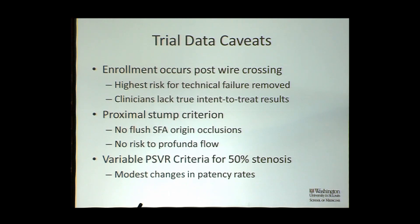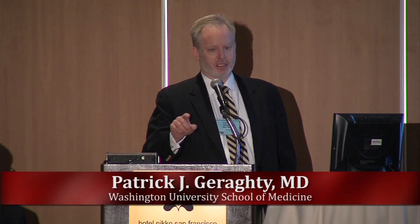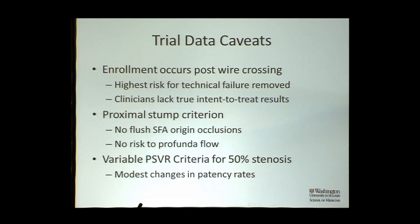Another thing is the proximal stump criterion. When we wrote some of these old protocols for SFA trials, we didn't want people endangering the profunda, so within the trial protocol is a caveat that says you can't enroll if the first centimeter of the SFA isn't a beautiful, clean little stump you can safely end your intervention in — very different from the flush SFA origin occlusions we commonly associate with TASTI lesions. In these trials there was really no risk to profunda flow, which is very different from routine practice. Lastly, the use of different PSVR criteria for stenosis ramps up from 2.0 to 2.5 to 3.0, going up 5% or a little bit more in terms of patency estimates, so what a particular manufacturer chose does have a slight effect in those lateral comparisons.